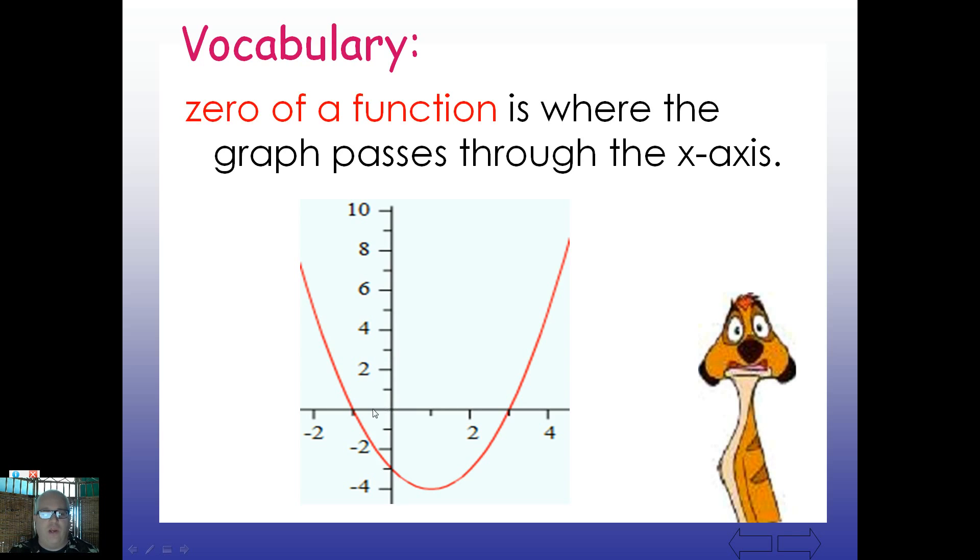This is where the graph passes through the x-axis. Notice that whenever we're talking about the x-axis, what's the value for y? Well, if we're looking at a graph here, an xy plane, notice that whenever we're talking about this x-axis, if this is positive one, positive two, positive three, if we work backwards two, one, this is zero here. So whenever we're talking about the x-axis, the y value has to be zero.